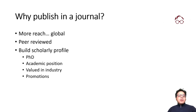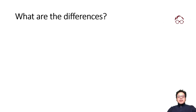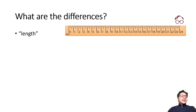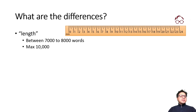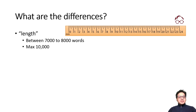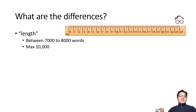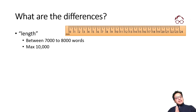So now, what are the differences between a journal paper and a thesis? The most important one is length. Journal articles are usually between seven thousand and eight thousand words, with a maximum of ten thousand words — it's difficult to find journals that publish articles longer than that, including references. But most master theses are around twenty thousand words.